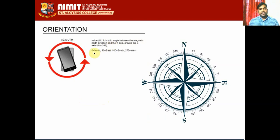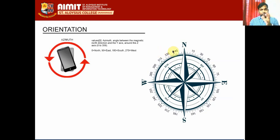You can understand that if azimuth gives zero as the value, it means it is pointing north. If it is 90, it is pointing east. If it is 180, it's pointing south. And if it's 270, it's pointing west. I'm going to use a compass image in my app, and based on the degree which my sensor returns, I'm going to rotate that compass image so that it looks like a compass app working in your phone.